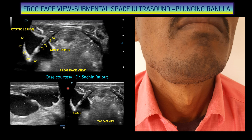This is a classical case of a plunging ranula. Thanks to Dr. Sachin Rajput for contributing this case. This demonstrates the importance of the frog face view and submandibular space views, where you can diagnose various entities presenting in the submental space and floor of the mouth.